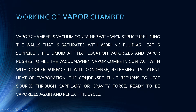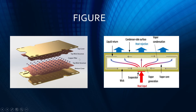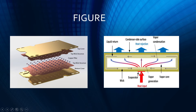The condensed liquid fluid returns to the heat source via capillary or gravity force and is ready to be vaporized again, repeating the cycle. As shown in the schematic diagram, the heat source — such as a CPU or microchip — is at the bottom. The vapor chamber is placed above it, and above that is the heat sink, which is the cooler surface. If you want even better thermal management, you can add fins above that.